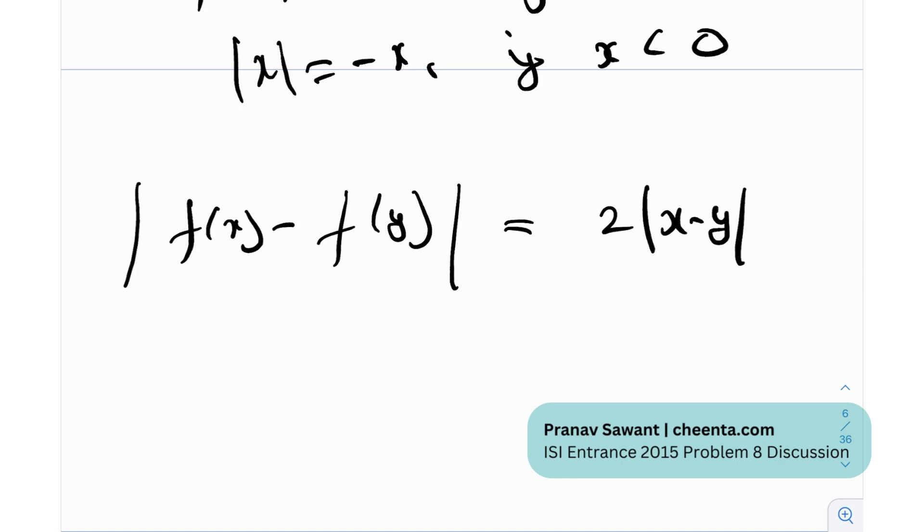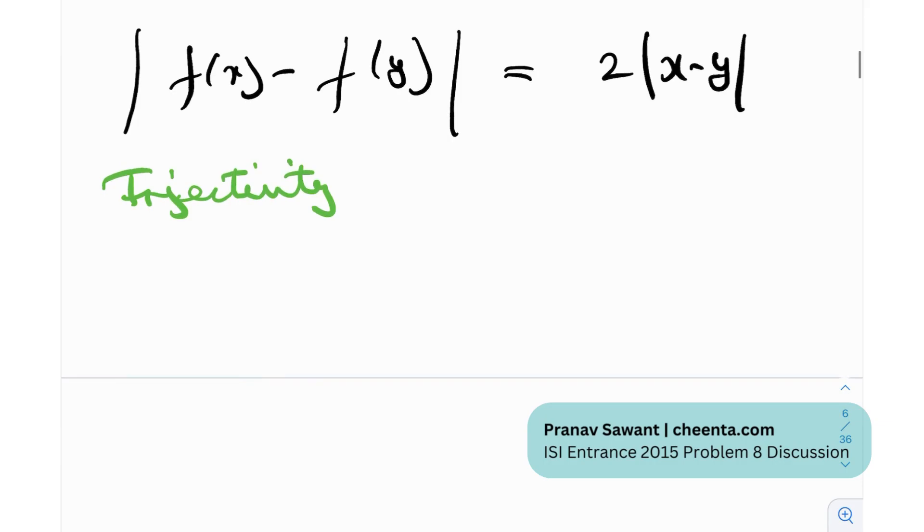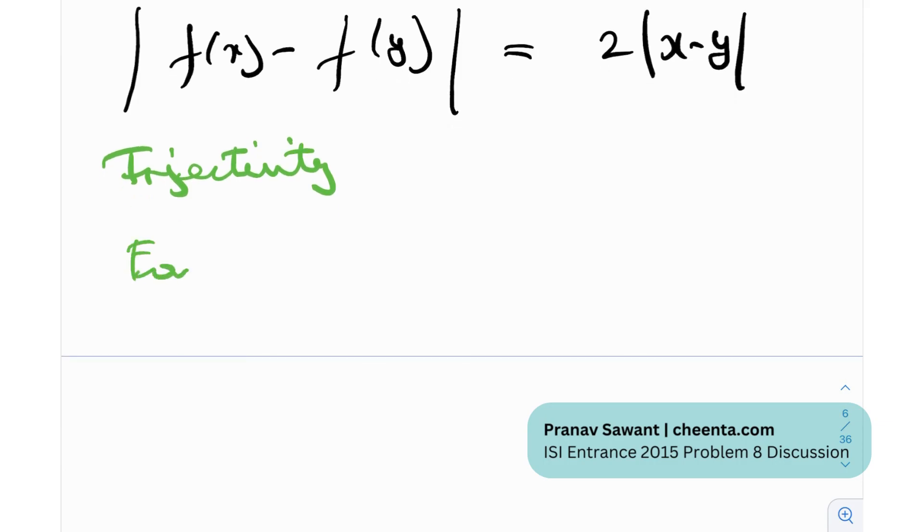So what can we do? Now I'm probably going to discuss an important concept called injectivity. So what is injectivity? The property is called injectivity and the functions that follow are called injective functions. So let's say for any function, if f(a) is equal to f(b), and that implies a is equal to b, then f is said to be injective.